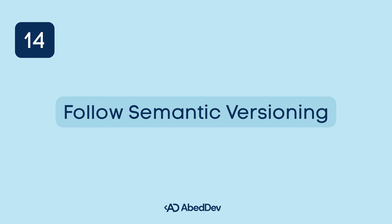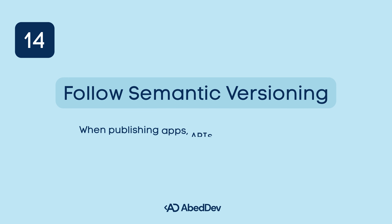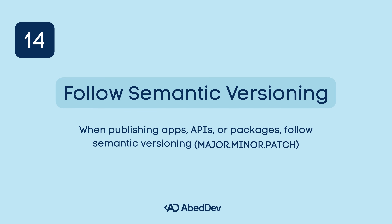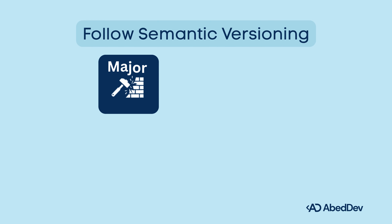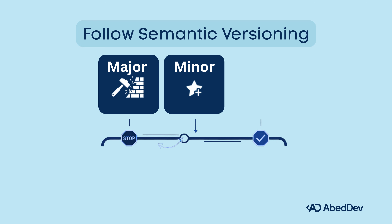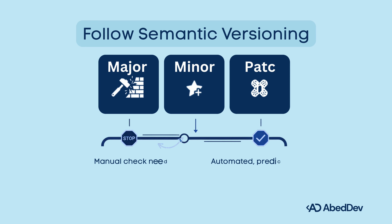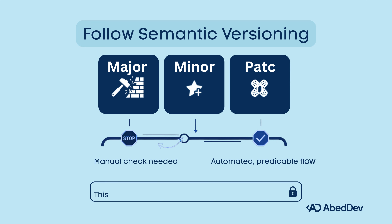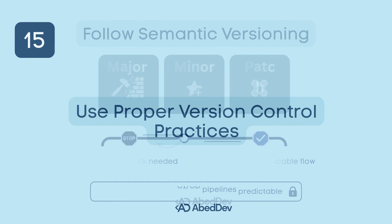Follow semantic versioning. When publishing apps, APIs, or packages, follow semantic versioning: Major.Minor.Patch. Major means breaking changes. Minor means new features, backward compatible. Patch means bug fixes only. This keeps the team and CI/CD pipelines predictable.